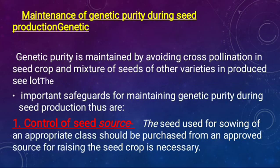Genetic purity is maintained by avoiding cross-pollination in seed crop and mixture of seed of other varieties in produced seed lot. The important safeguards for maintaining genetic purity during seed production are control of seed source.